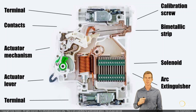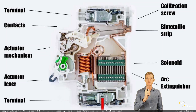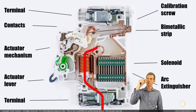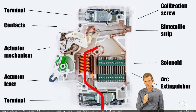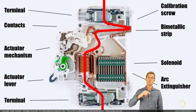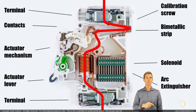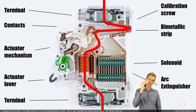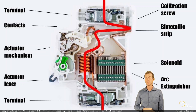Let's run through a current flow scenario. Current arrives at the bottom terminal, travels up through the solenoid, and when contacts are closed, runs through the bottom contact toward the top contact, then through the bimetallic strip and out through the top terminal. So all current passes through both the solenoid and the bimetallic strip. If the current is slightly elevated within the slow tripping region, the bimetallic strip heats up, bends, and pops the contacts open.